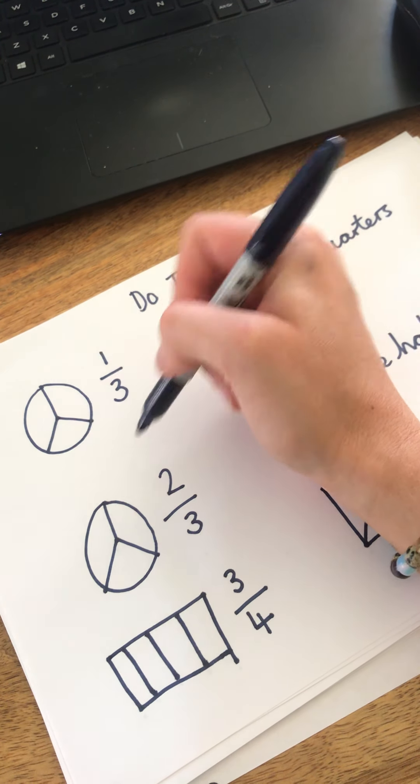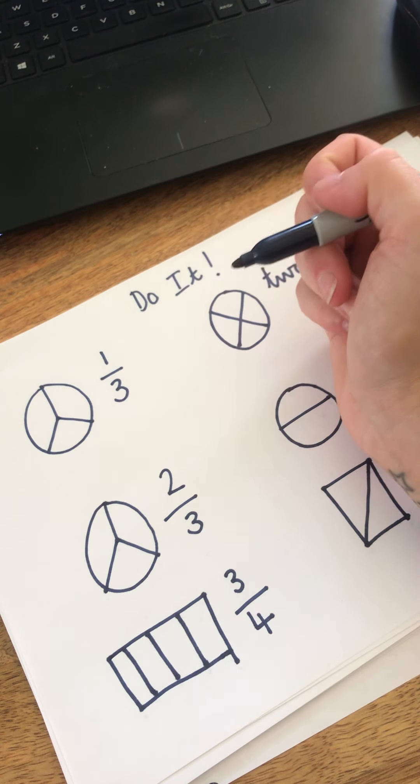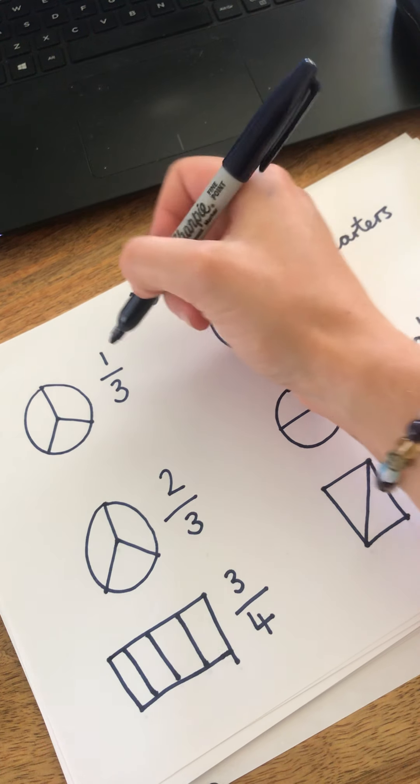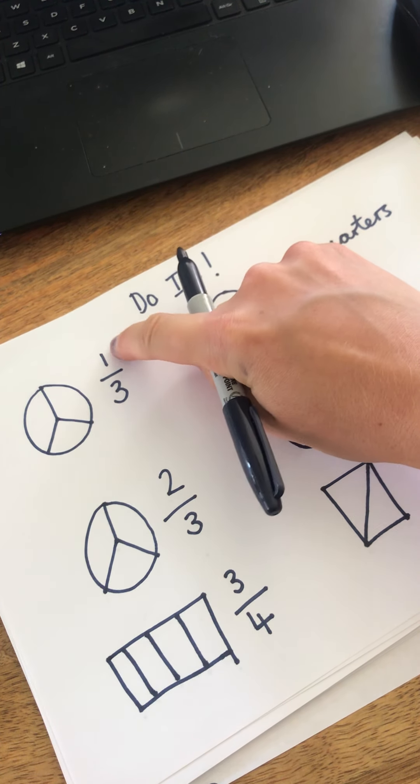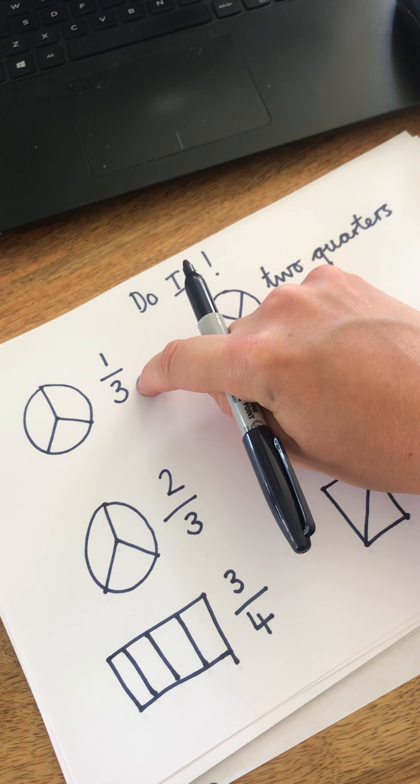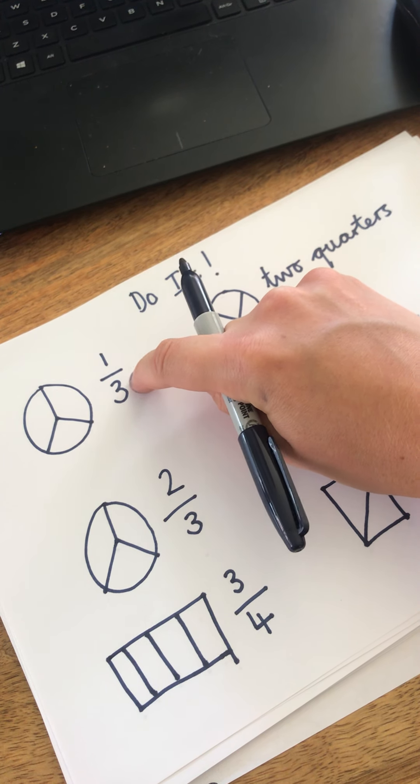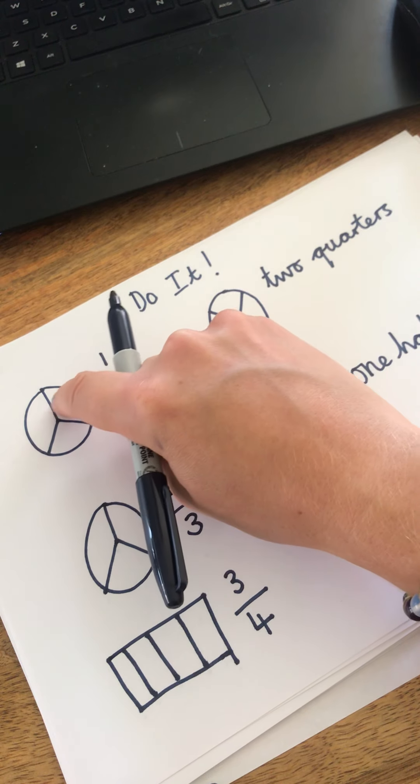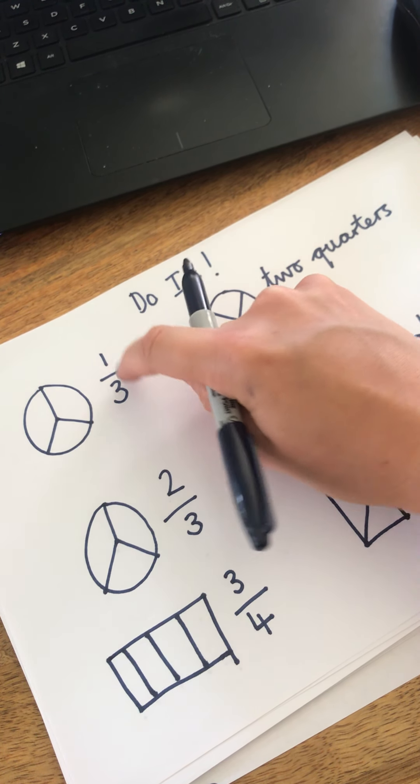So here's one I've drawn. It says you have to colour in one third. Now thinking back to the previous video, we need to look at the top number. This is how many parts need to be shaded. And this part, I wonder if you can remember the fancy name, the denominator, is how many parts make the whole, how many parts all together. So we know that there are three. So this is telling me to shade in one third.